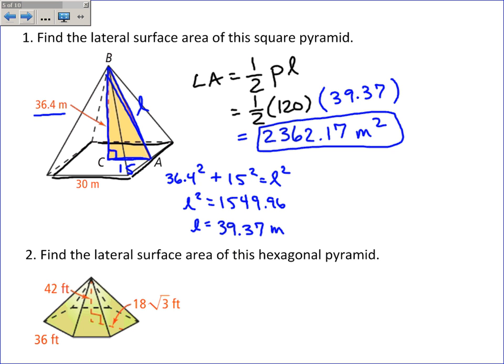Number two, I'll do this one real quick because some students have found it confusing. We'll look at this right triangle. The height, the slant height, and the apothem that connects them. So I'll redraw it over here, just so we can see it better. The height is 42. The slant height is 18 root 3.